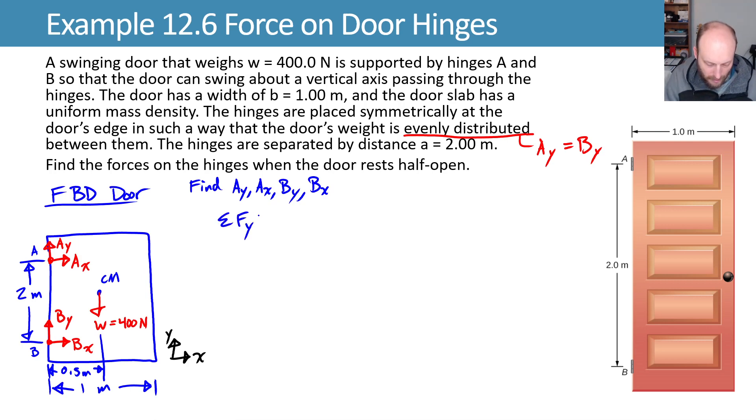Alright, sum our forces in the Y. We'll sum to zero, call up positive, and this says that AY plus BY minus the weight of 400 newtons equals zero.